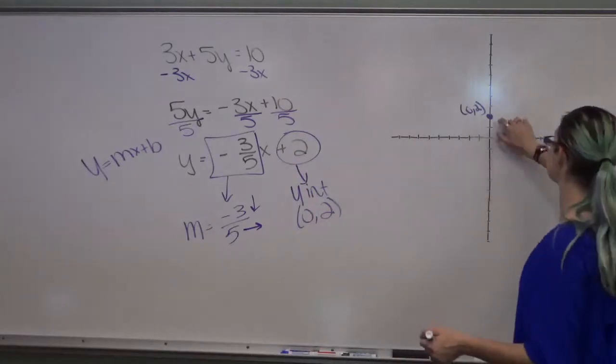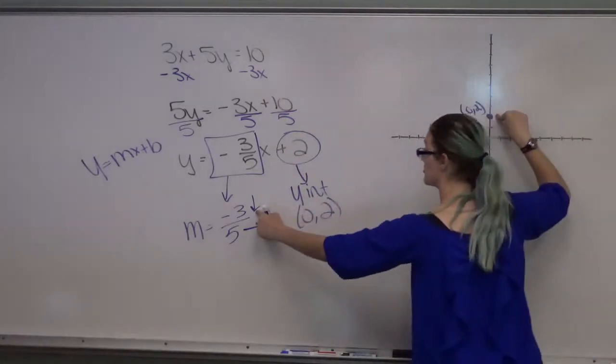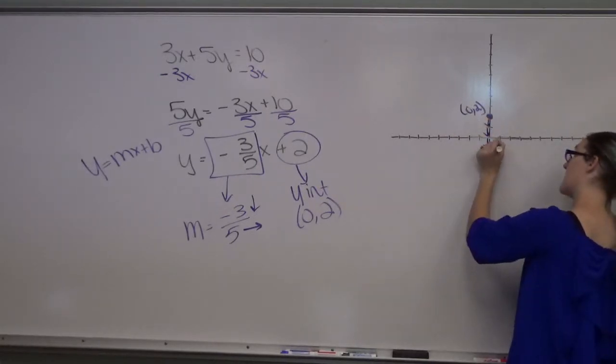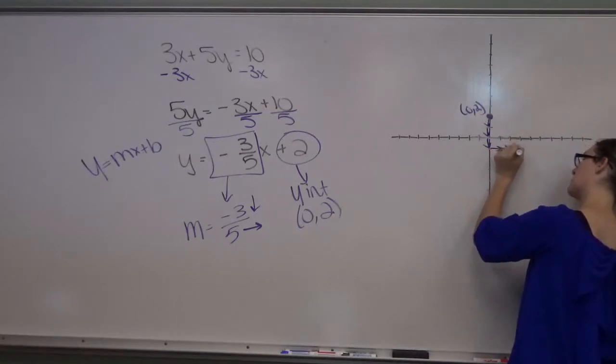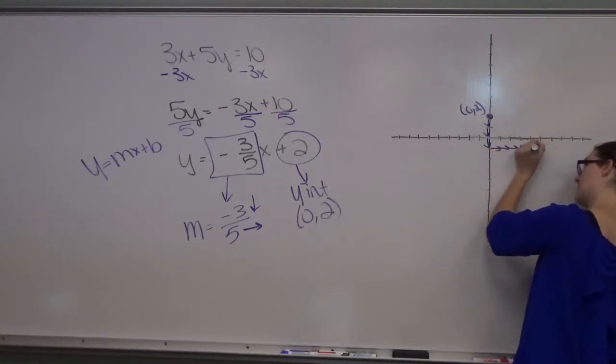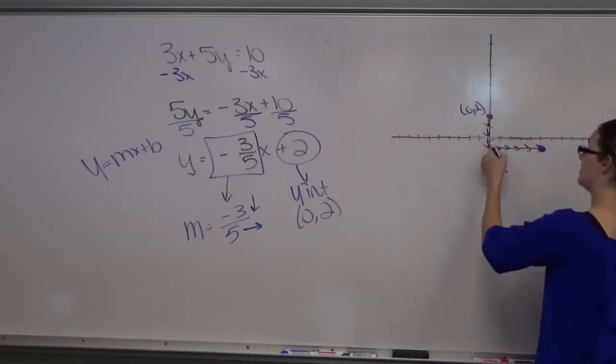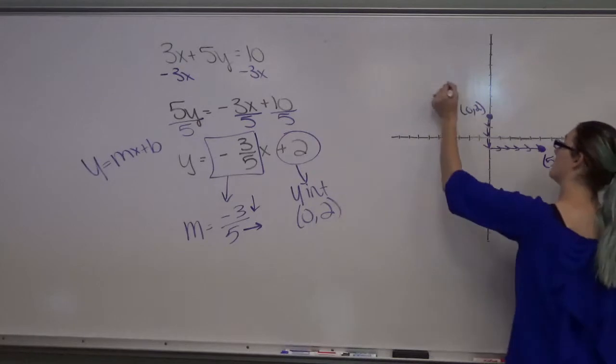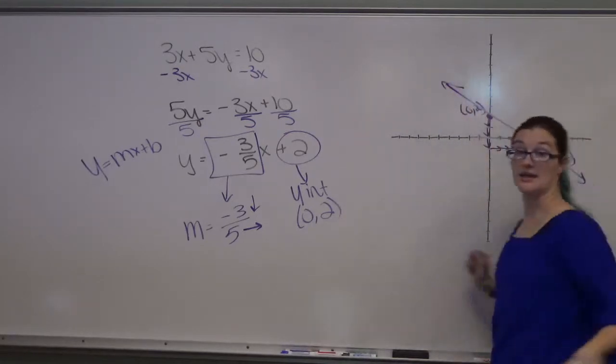Slope tells you from this dot to go down 3. 1, 2, 3. And right 5. 1, 2, 3, 4, 5. And put your next dot. You know how to make ordered pairs. This is 5, negative 1. Connect the dots.